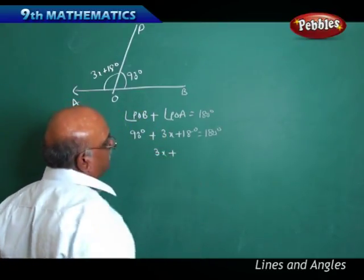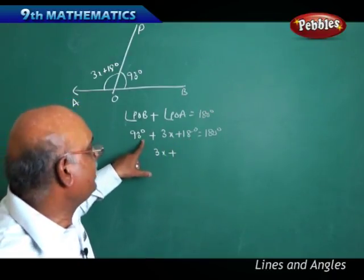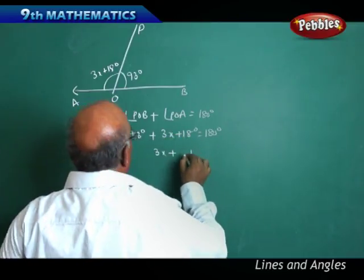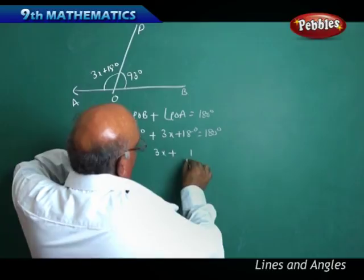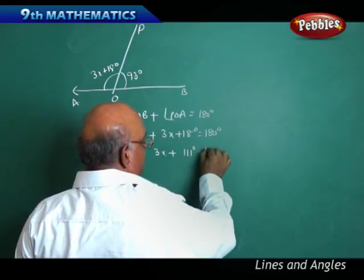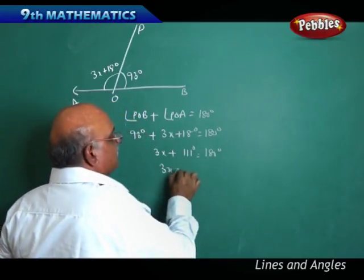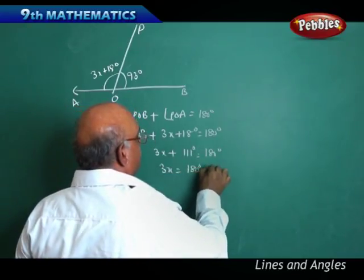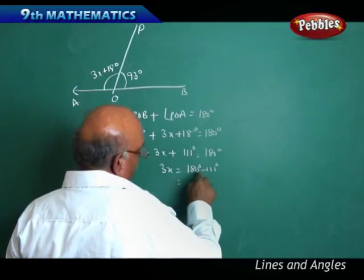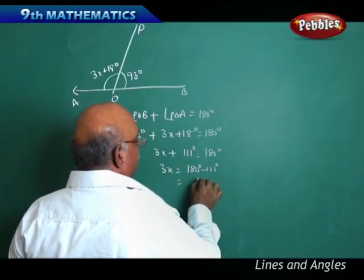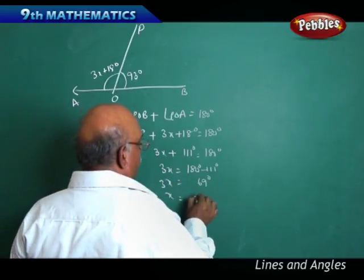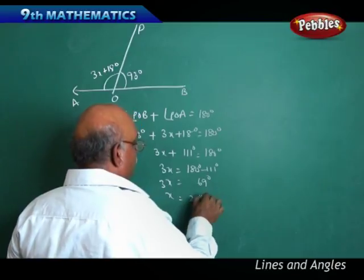Solving: 3X plus 18 plus 93 gives 3X plus 111. Therefore 3X plus 111 degrees equals 180 degrees, so 3X equals 180 minus 111 equals 69. Therefore X equals 23 degrees.